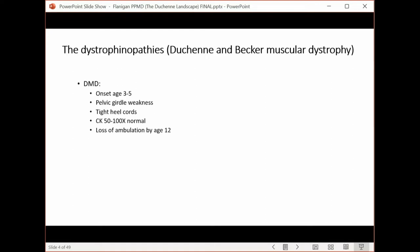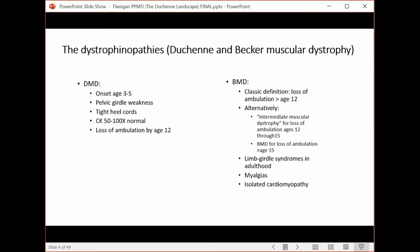Dr. Becker, who we won't speak about much today, described Becker muscular dystrophy, also an X-linked disorder. Becker muscular dystrophy encompasses all disorders of the dystrophin gene that cause things like limb girdle syndromes in adulthood, muscle ache syndromes, and even isolated cardiomyopathy syndromes.